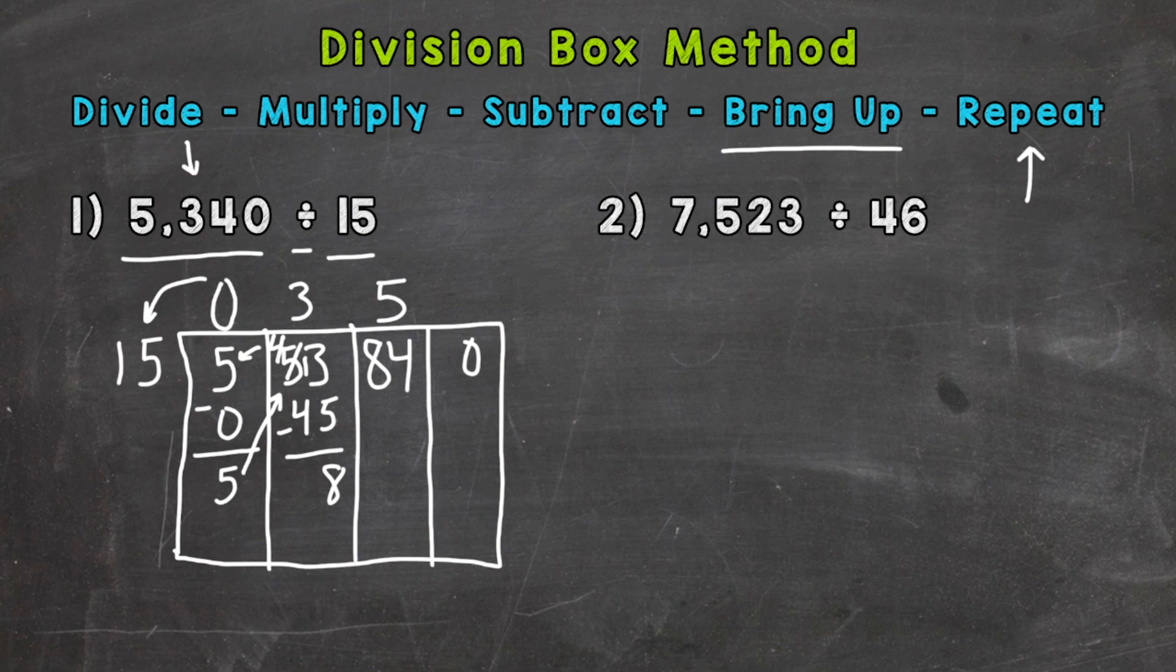So 5 times 15. We're at the multiply step. Is 75. Subtract. 84 minus 75. Well, you can use mental math. Or we will write it out here. We'll need to borrow. And we get to 14 minus 5 is 9. Or with mental math, you get 9 as well.